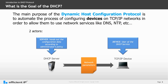The main purpose of the Dynamic Host Configuration Protocol, or DHCP, is to automate the process of configuring devices on a TCP/IP network in order to allow them to use network services such as DNS, NTP, the web, etc. The components of DHCP are simple: a DHCP server that hands out configuration data, also known as network parameters, according to the network policy set by the administrator, and the client, or a TCP device, who is the user of the DHCP services.